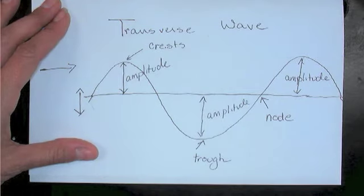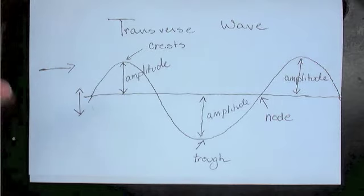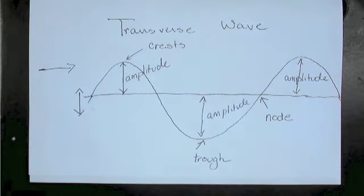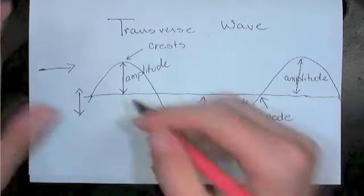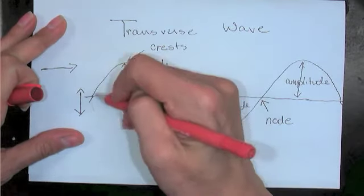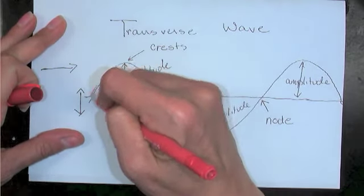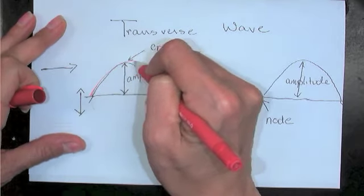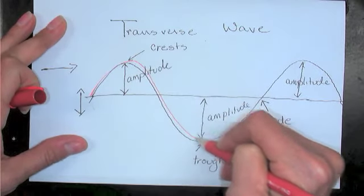The other quantity we want to talk about is the wavelength, and let me see if I can find a contrasting color for that. Here we go, teacher's handy red pen. So the wavelength is another quantity that we can actually measure in meters, and the wavelength is basically the length of one wave.